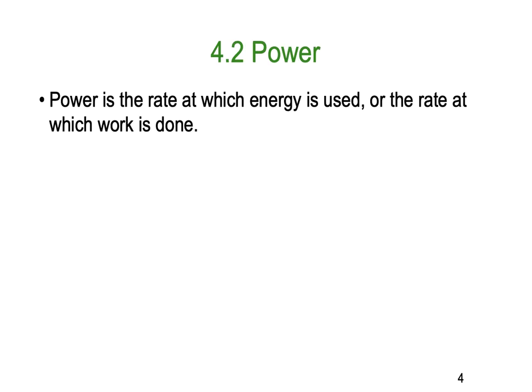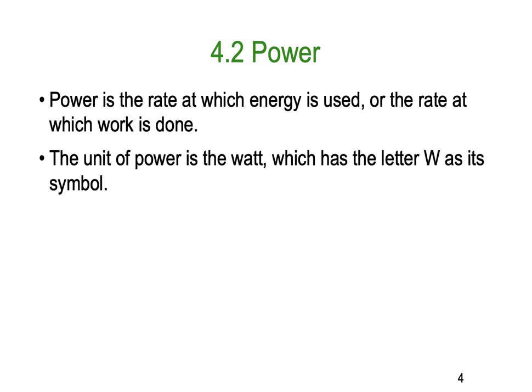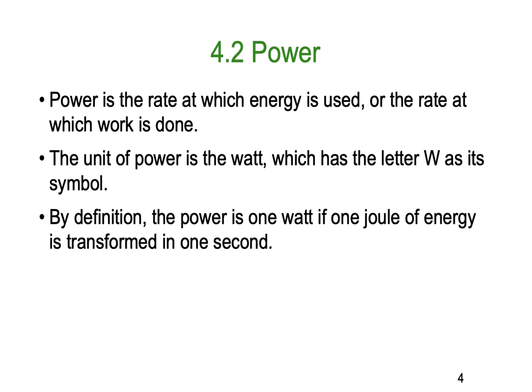Power is the rate at which energy is used or the rate at which work is done. The unit of power is the watt, named after Isaac Watts, which uses the uppercase capital W as its symbol. By definition, power is one watt if one joule of energy is transferred in one second. Power is given the symbol P, uppercase P, and it's the rate of doing work.